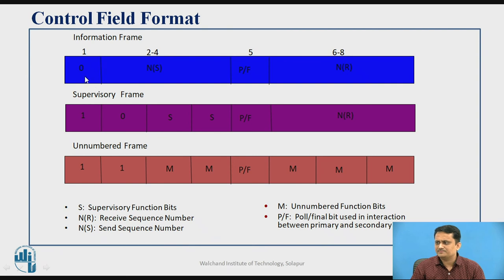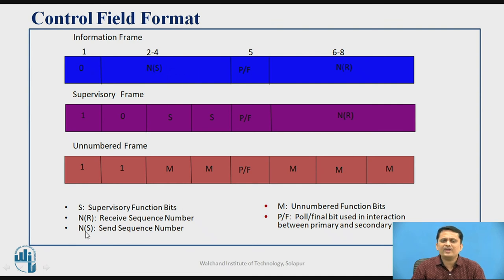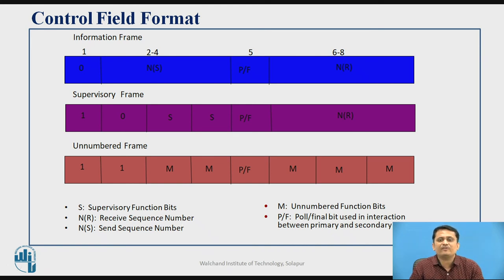Looking at the control field format: if the first bit is 0, it is an information frame; if 1 0, supervisory; if 1 1, unnumbered. For the information frame, the next 3 bits represent N(s) — the sender's sequence number — and N(r) is the receiver's sequence number. HDLC uses the sliding window protocol for flow control, which requires sequence numbering for frames.